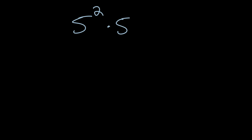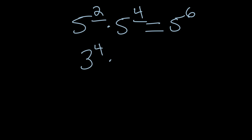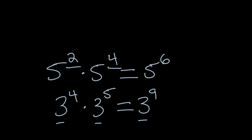Before we dive in, let's remember a specific exponent property you should have seen before. For 5 squared times 5 to the fourth power: when multiplying same-base terms, you always add your exponents, giving 5 to the sixth power. Similarly, 3 to the fourth power times 3 to the fifth power equals 3 to the ninth power — four plus five is nine, and the base of 3 stays the same.